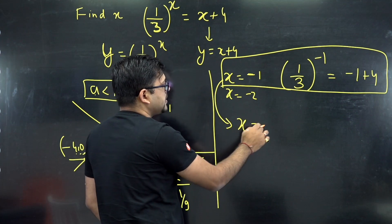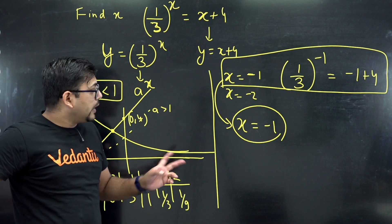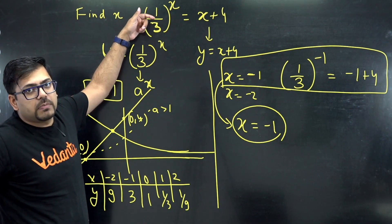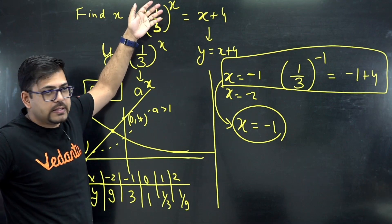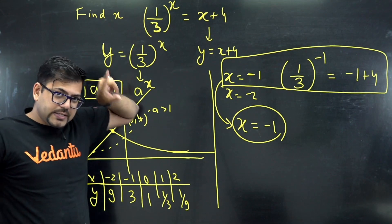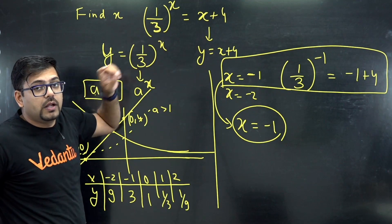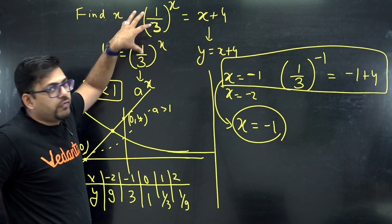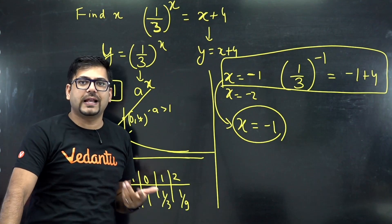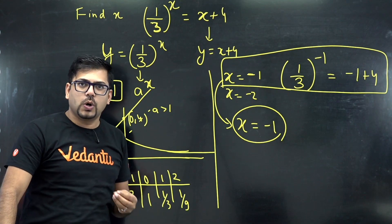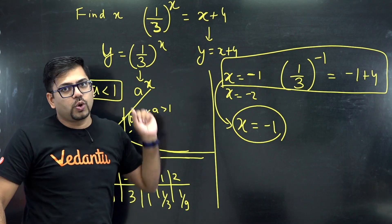I hope all of you understood. Now here if there would have been any other number, like instead of 1 by 3 you would have put 24 by 5 or anything else, in that situation still you would get some answer because that is also a number. You will get some answer, but the thing is this, that what will be that answer that we won't be able to find using normal calculation.